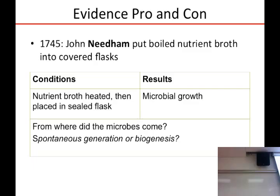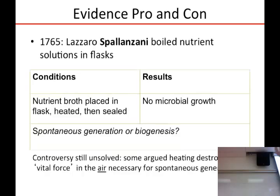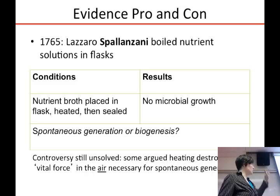About 100 years later, John Needham — so this debate is still going on — wanted to test this again. He put boiled nutrient broth into covered flasks, and it grew things. Where did the microbes come from in the sealed flask? There was still air inside the flask. Remember, at this time they didn't know if there was stuff besides air in the air. This was used to support spontaneous generation — it's just air, you can't see anything. It's not like there was a fly buzzing around in there; it's just nutrient broth that was heated and supposedly sterilized. This was what Needham was hoping to show, because he didn't buy the biogenesis idea.